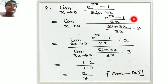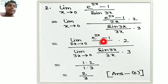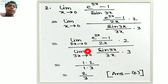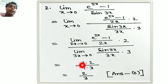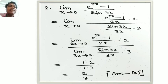We split this as: limit 2x tends to 0 of (e^(2x) minus 1) by 2x, and limit 3x tends to 0 of sin 3x by 3x, into 2 by 3. Both standard limits equal 1, so the answer is 1 times 2 by 3, which is 2 by 3. That is option C, and the answer is C.